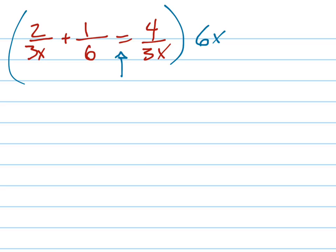This is different from when you're simplifying expressions and you're having to keep things balanced on the top and bottom. This is just keeping things balanced on the left and the right. So I'm going to multiply this 6x into both sides of the equation, which means every term gets the 6x.